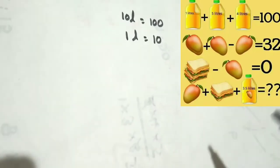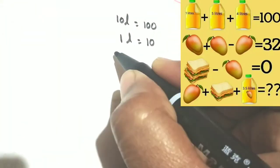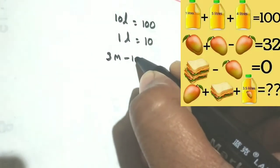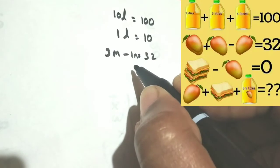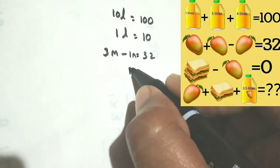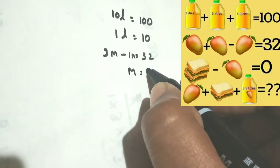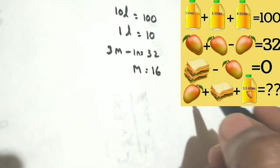Two mangoes — there are two mangoes, not a single mango. Two mangoes plus one mango minus one mango: totally three mangoes minus one. Three mangoes minus one mango is equal to 32 as given. That is nothing but three minus one equals two. Two mangoes is equal to 32, so a single mango is equal to 32 divided by two — you are going to get 16.